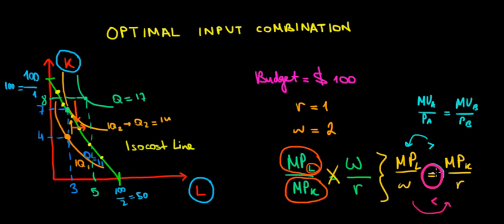And that happens to be the optimal input combination. That happens to be the golden rule, so to speak, of allocating labor and capital in the context of a firm. Hope this makes sense and we are done.